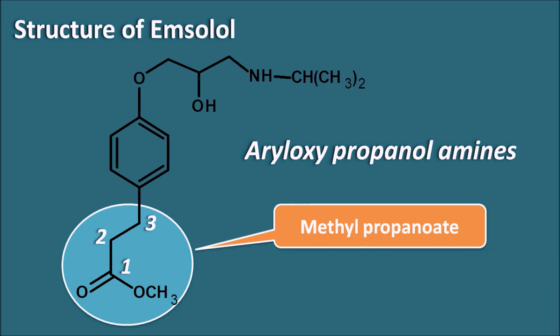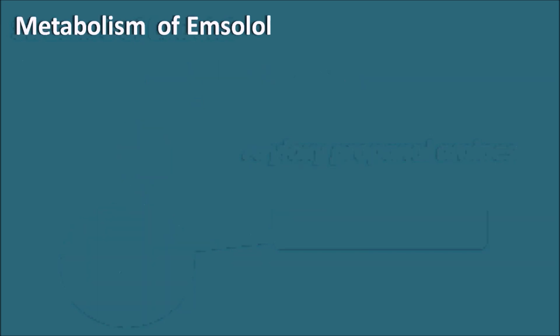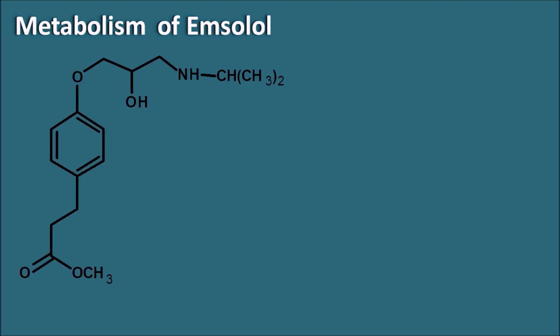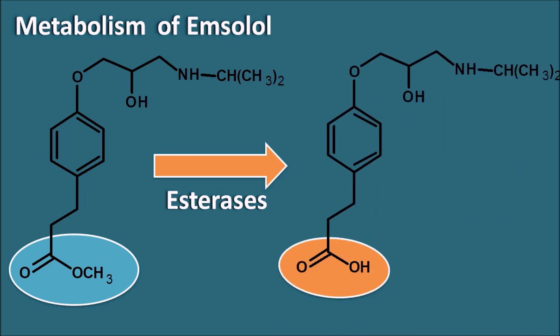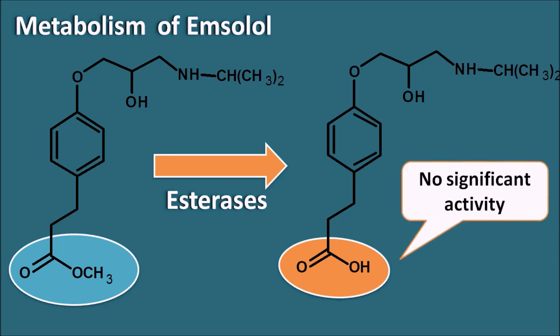This ester group is responsible for the short duration of action of esmolol. The ester functional group can be cleaved by esterases within the erythrocytes, converting it into a free carboxylic acid. This free carboxylic acid metabolite of esmolol has no significant activity on beta receptors, and because of this metabolism, esmolol is very short-acting.